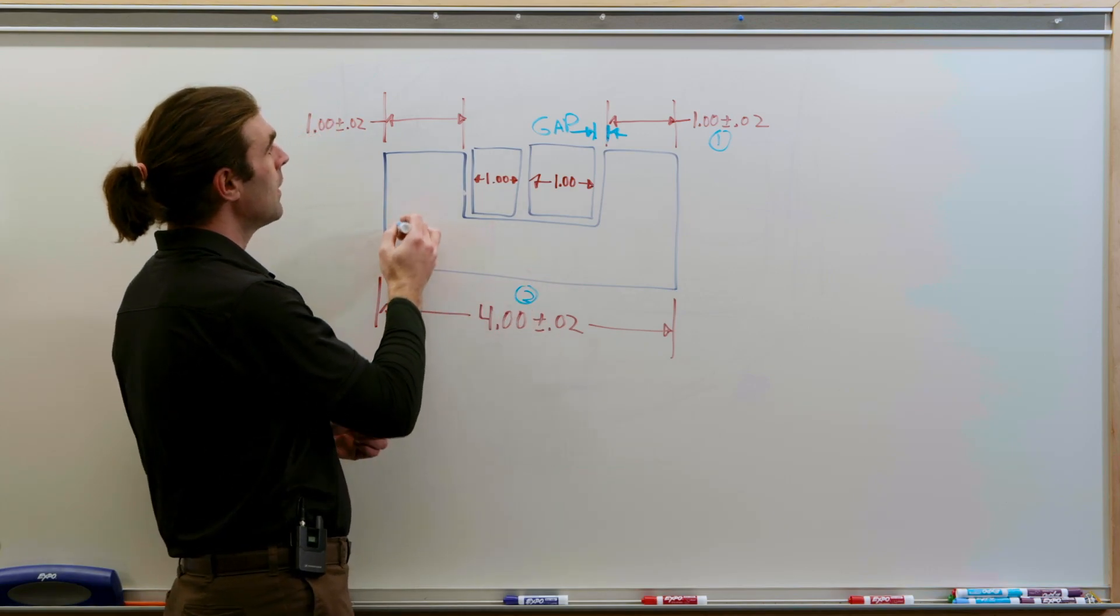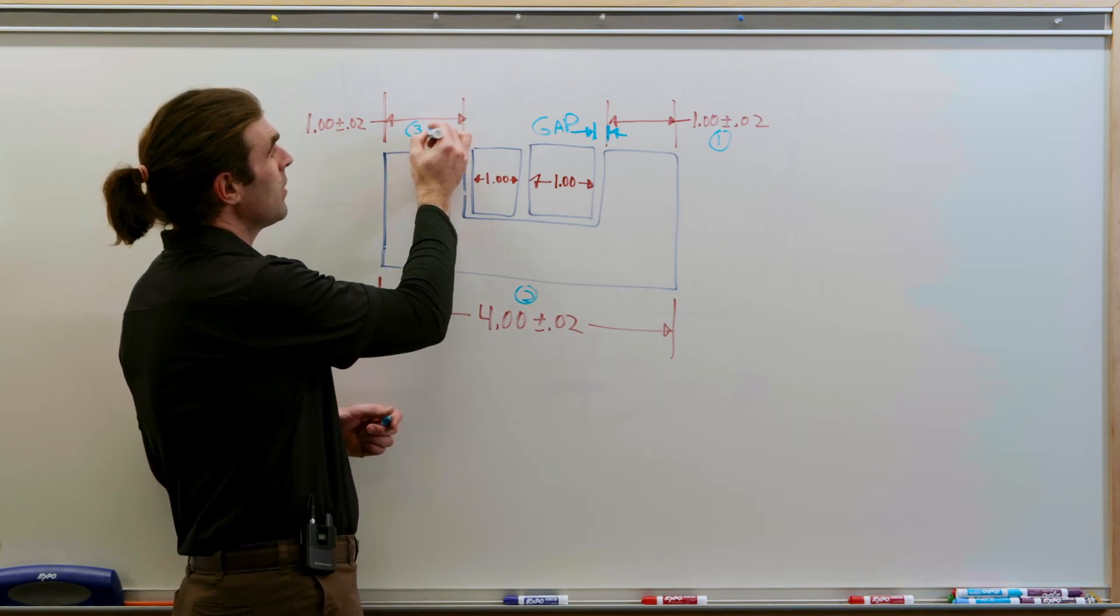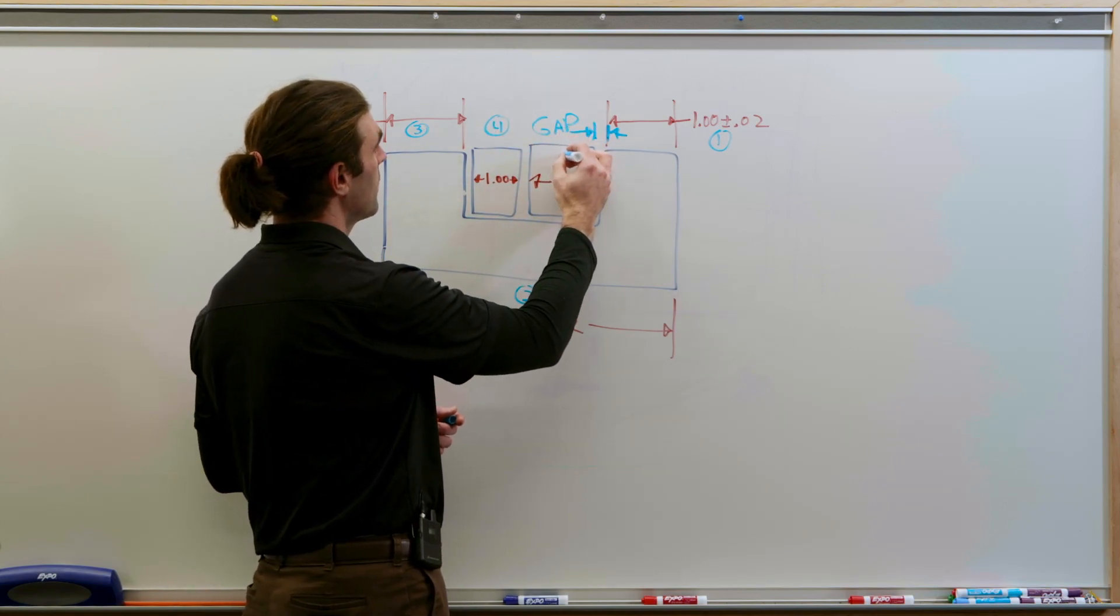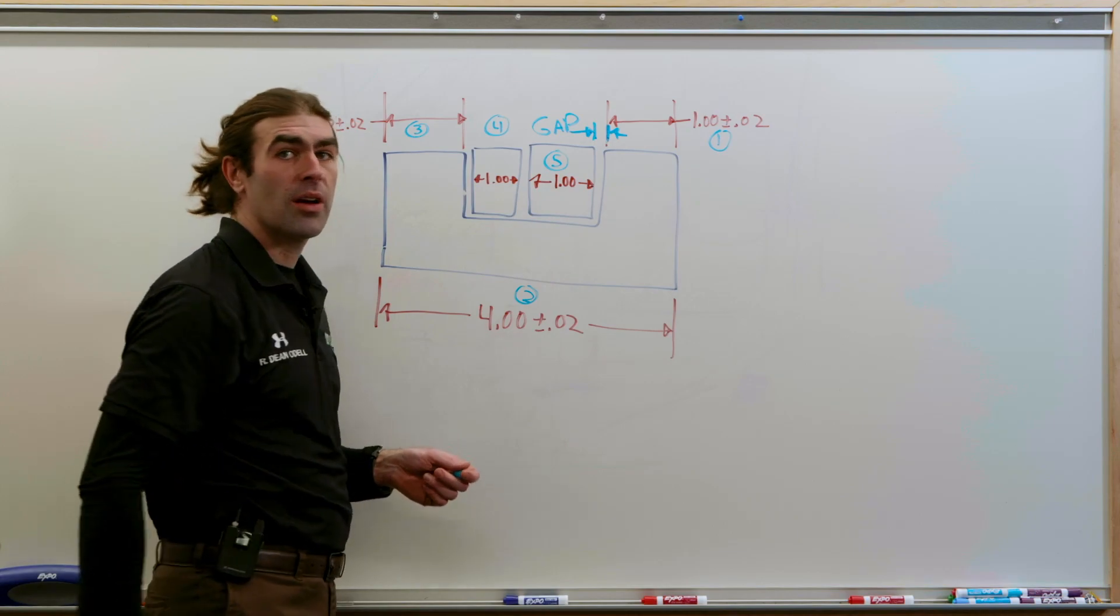So this is dimension number two. Now that leads us to this dimension. Now we're going back to the right. Now we've got the dimension on this block and the dimension on this block. That leads us back to the other side of the loop.